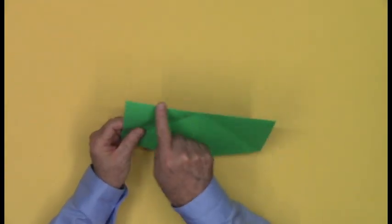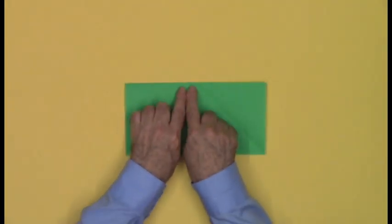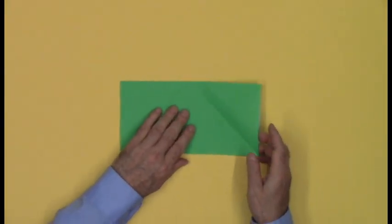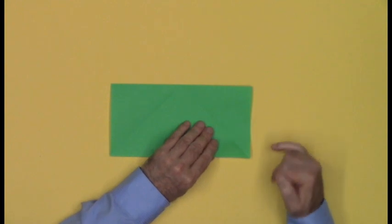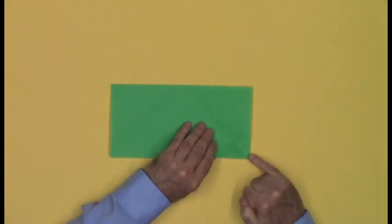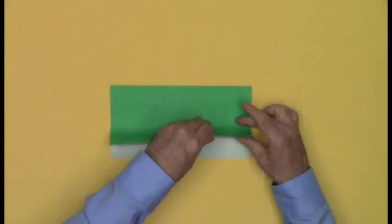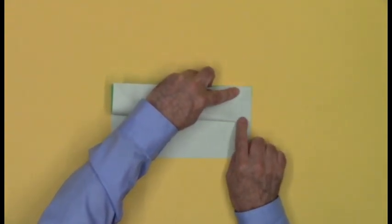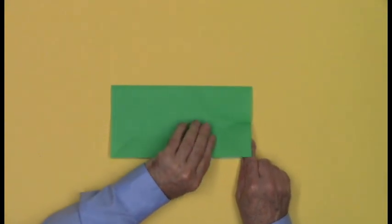Flip the paper so that the single folded edge is horizontal and runs along the top of the rectangle. We're going to put in two pinch marks. Take the bottom corner up to the top corner, aligning the edges, and then just put a pinch mark. Unfold.